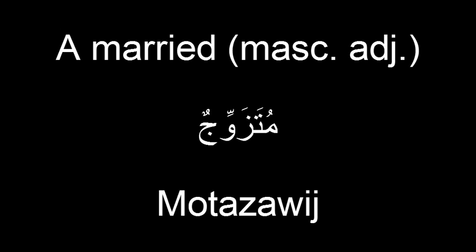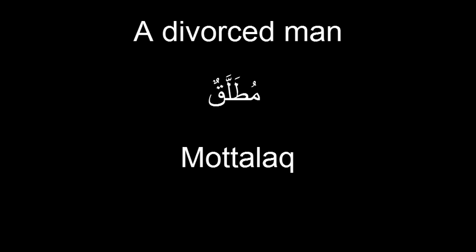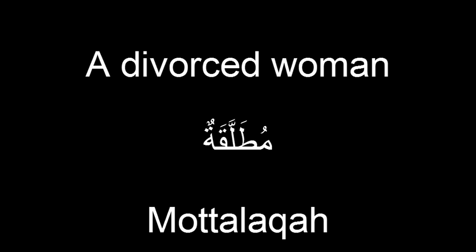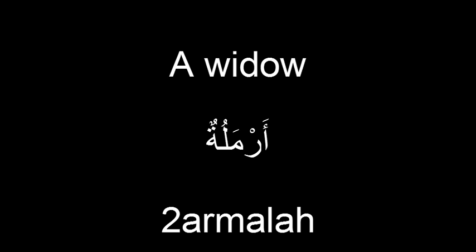A married masculine adjective is متزوج, and a married female adjective is متزوجة. A divorced man is متلق — the double T here represents the sound of the Arabic letter ط. A divorced woman is متلقة. The Q represents the letter قف. A widower or widow is عرمل.